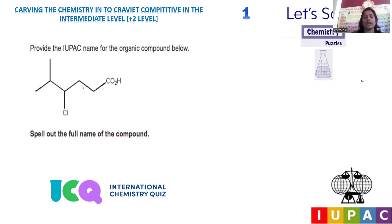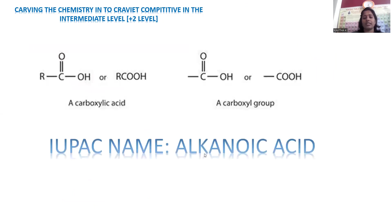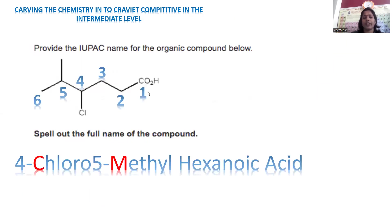Counting the parent chain: one, two, three, four, five, six carbons — hence hexanoic acid is the name. Alkanoic acid is the general IUPAC nomenclature for carboxylic acid. For this compound, we give numbering starting from carbon one as the carboxylic acid, then carbons two, three, four, five, six. On the fourth carbon you find the chloro group — indicate four-chloro. On the fifth carbon the side chain methyl is present — five-methyl. Being a six-carbon chain, hexanoic acid is the IUPAC nomenclature.